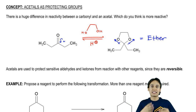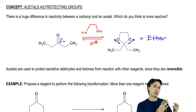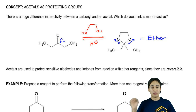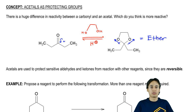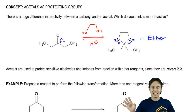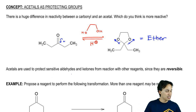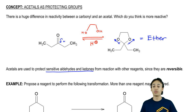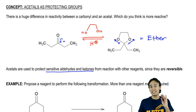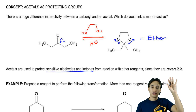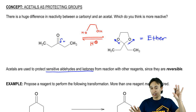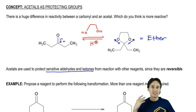Now, which one is safer if you need to run a reaction somewhere else on the molecule — a carbonyl or an acetal? The answer is an acetal, because an acetal really isn't going to react with almost anything. Whereas a carbonyl is so reactive it can even react with water. Acetals are used to protect sensitive aldehydes and ketones from reaction with other reagents since they're reversible — you convert the carbonyl to an acetal, do your reaction elsewhere, then hydrolyze it back to the original carbonyl.